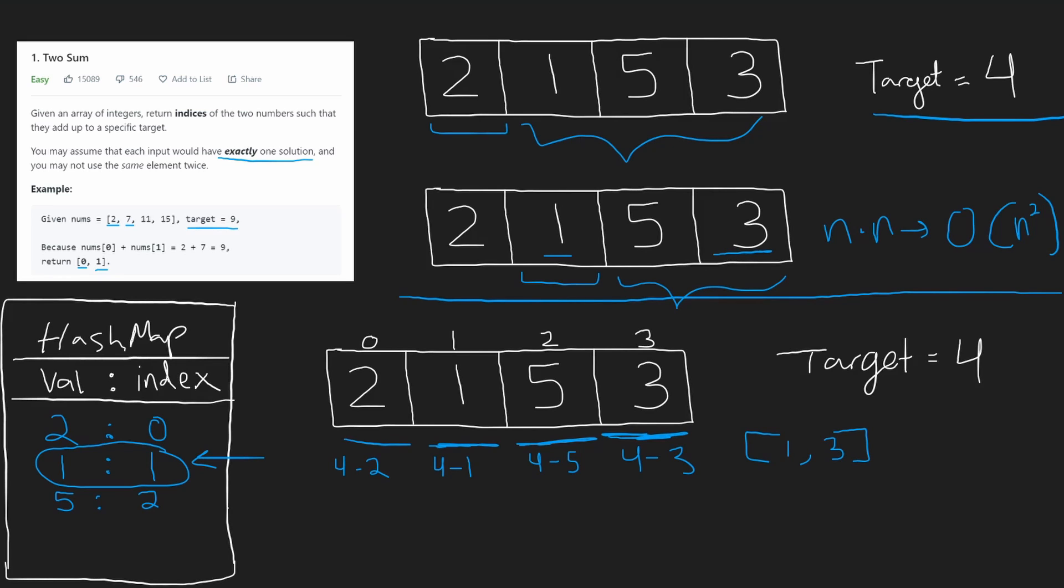So with this algorithm, we don't have to initialize our hash map. It can be initially empty, and then we can just iterate through this array in one pass.